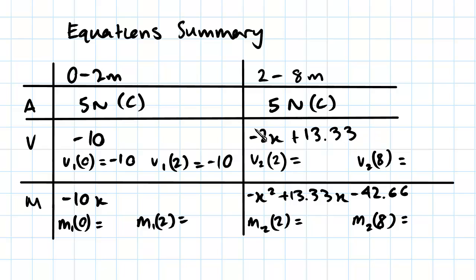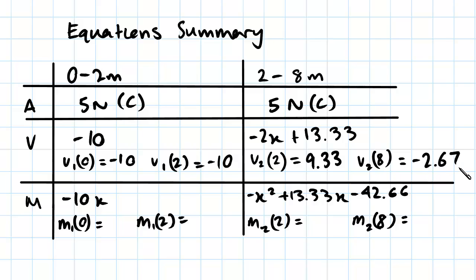The shear for the second span is a function of x: minus 2x plus 13.33. So V at 2 meters is equal to 9.33, and V at 8 meters is equal to minus 2.67.